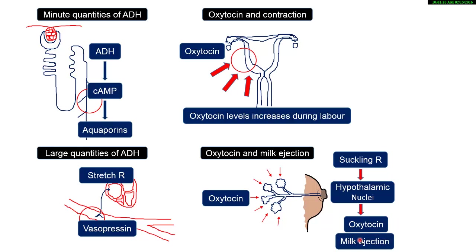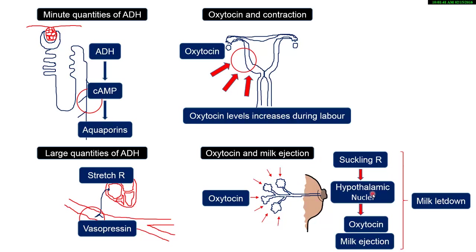This whole process — from the suckling reflex, messages being sent to the hypothalamic nuclei, release of oxytocin by the posterior pituitary, squeezing of the alveoli, and ejection of milk — is what is known as milk letdown. You should know this very well. This is the biological function of oxytocin.